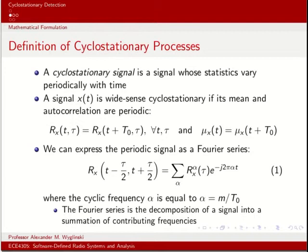We can express the autocorrelation function because it's periodic. We can represent a periodic signal using a Fourier series equivalent. Let's represent this periodic signal in terms of Fourier series coefficients Rₓ^α(τ), then e^(-j2παt). We add this for all possible α. α here we call the cyclic frequency.